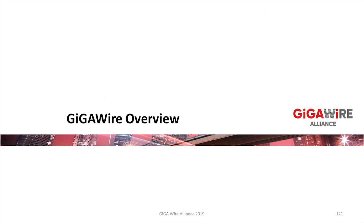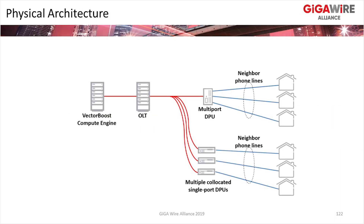First, an overview of this technology for those who aren't familiar. This is the physical architecture — you have a multiport DPU, some number of single-port DPUs, fiber fed off an OLT, XGS-PON or G-PON, and then a VectorBoost Compute Engine. In G.HN we don't have vectoring like you have with G.fast, so we have to be clever with crosstalk mitigation that we actually run in the cloud. It's a really cool real-world example of network function virtualization.